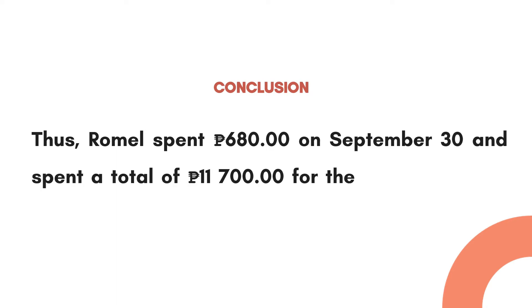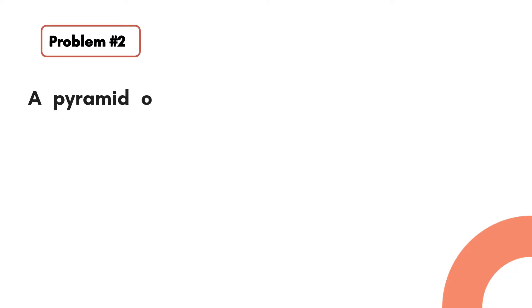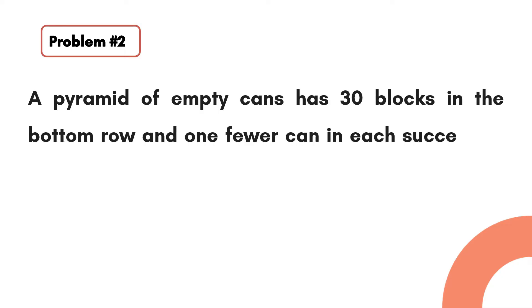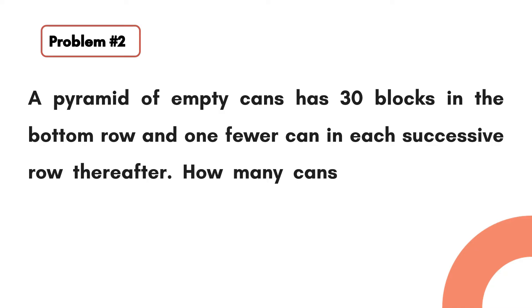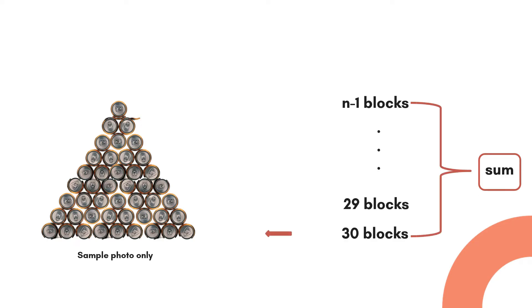Here's another problem: A pyramid of empty cans has 30 blocks in the bottom row and one fewer can in each successive row thereafter. How many cans are there in the pyramid? We are going to compute for the total number of empty cans given that the bottom row has 30 blocks and decreases by one going higher. The first term is 30, followed by 29, and so on, with one block at the top.